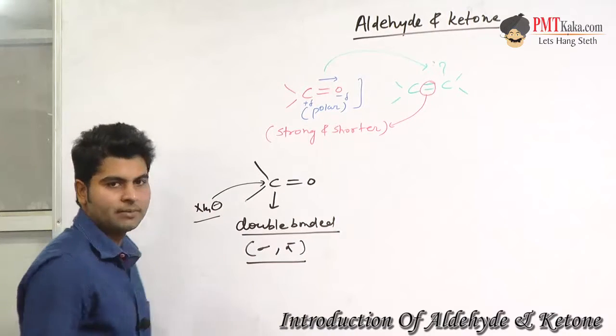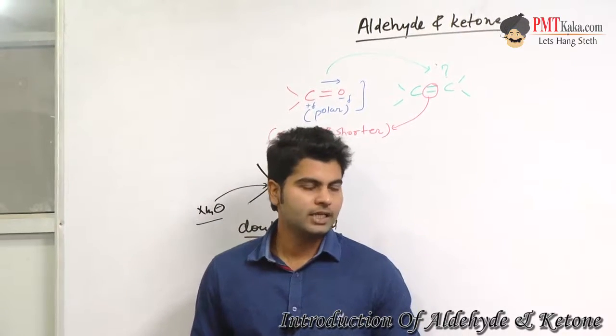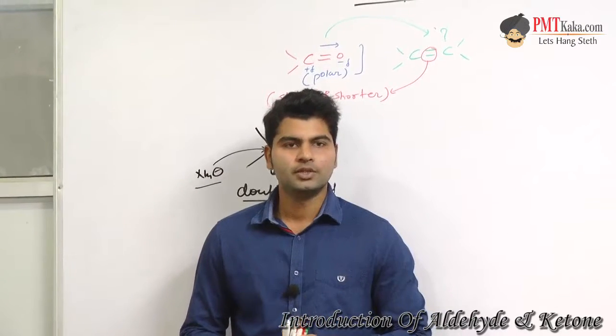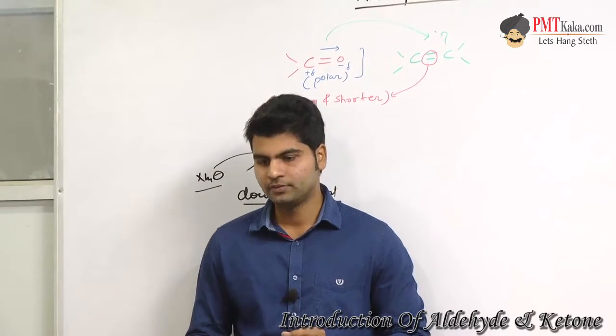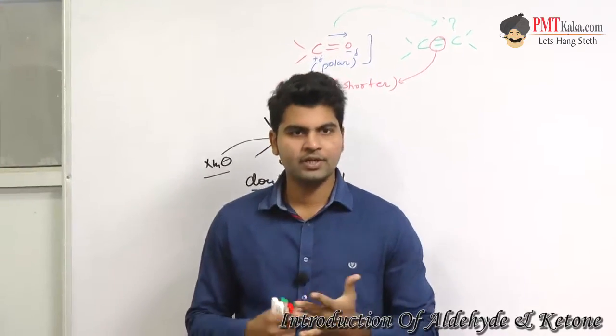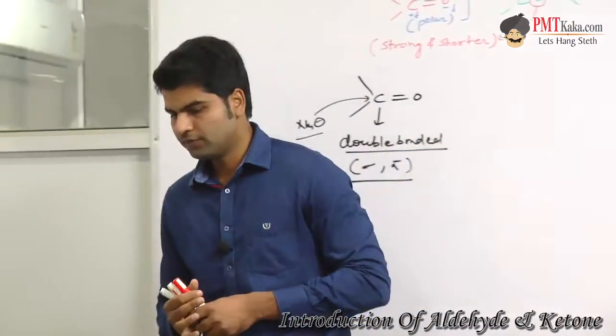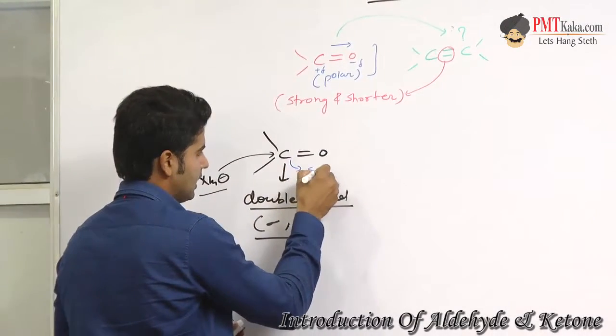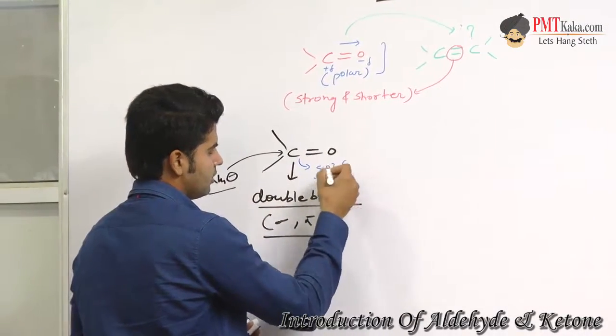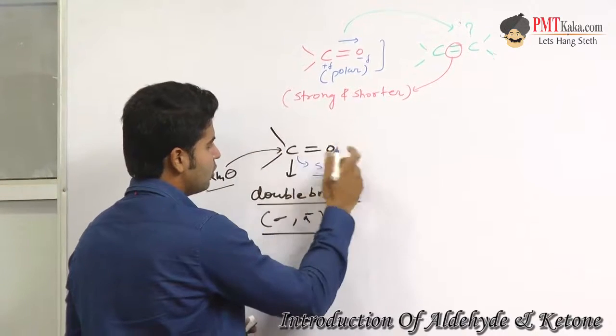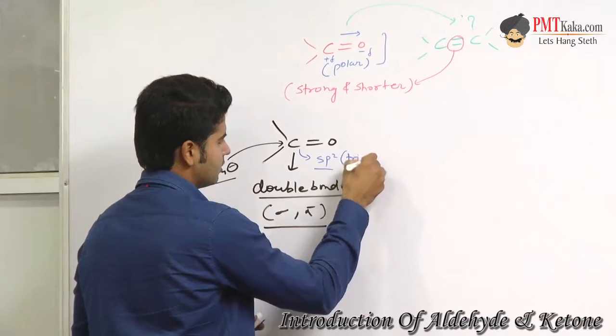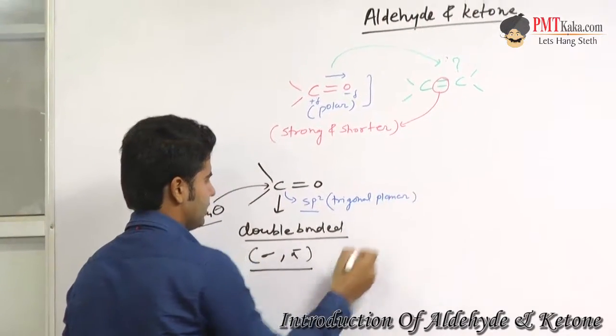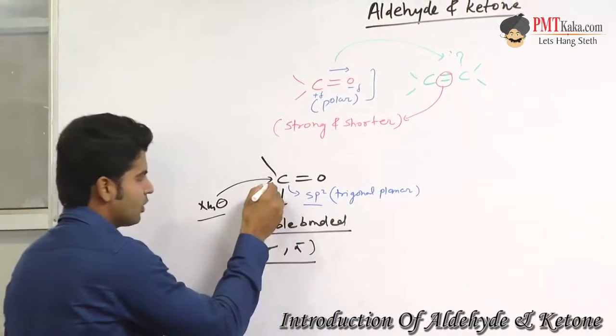Because this carbon is electron deficient, the carbonyl compounds undergo nucleophilic addition reaction. This carbon is sp2 hybridized, and you can see this molecule is trigonal planar. This format is arranged in trigonal planar.